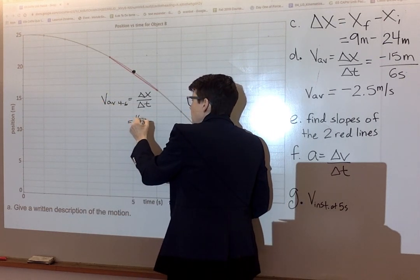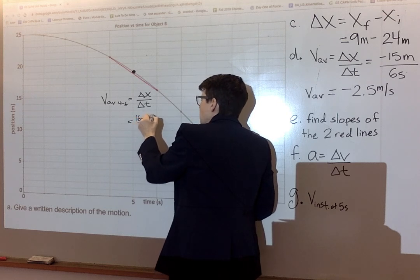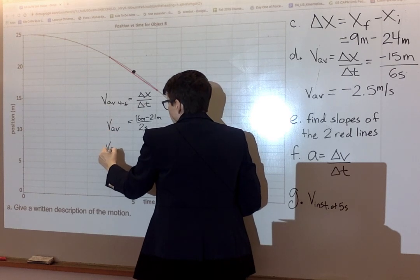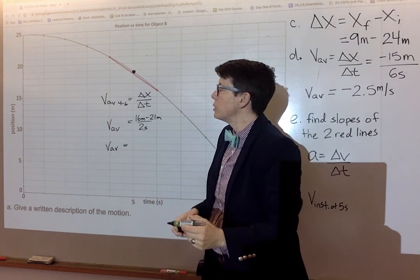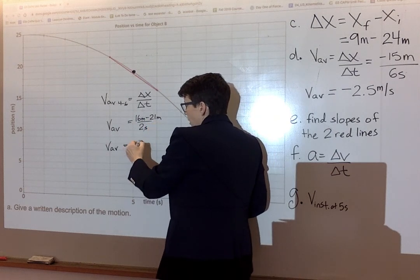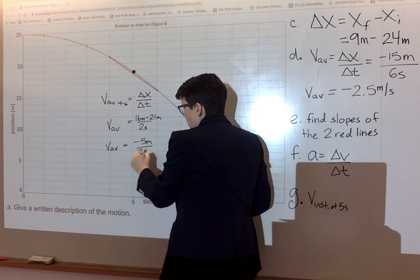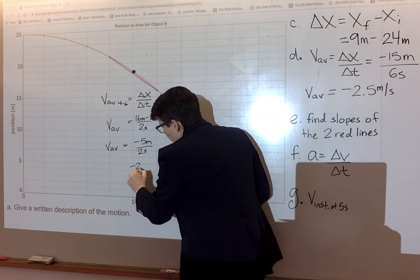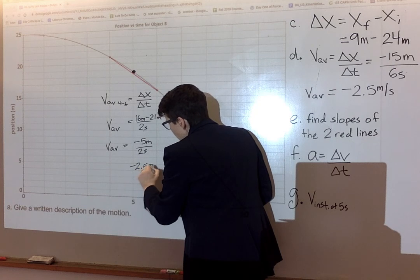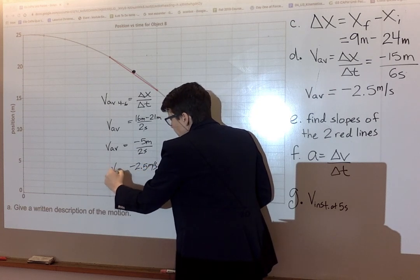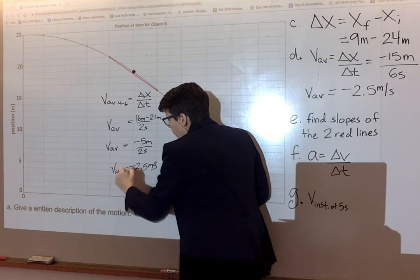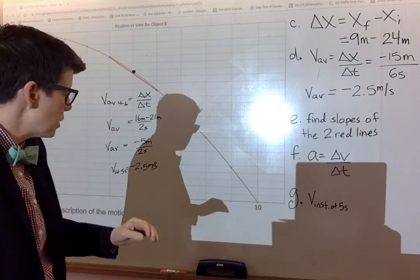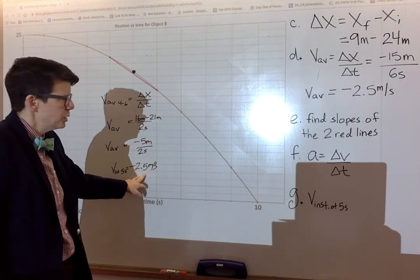What's that? Five meters, negative five meters over two seconds. Two goes into five, negative two and a half times. At five seconds, the object has an instantaneous velocity of negative two and a half meters per second.